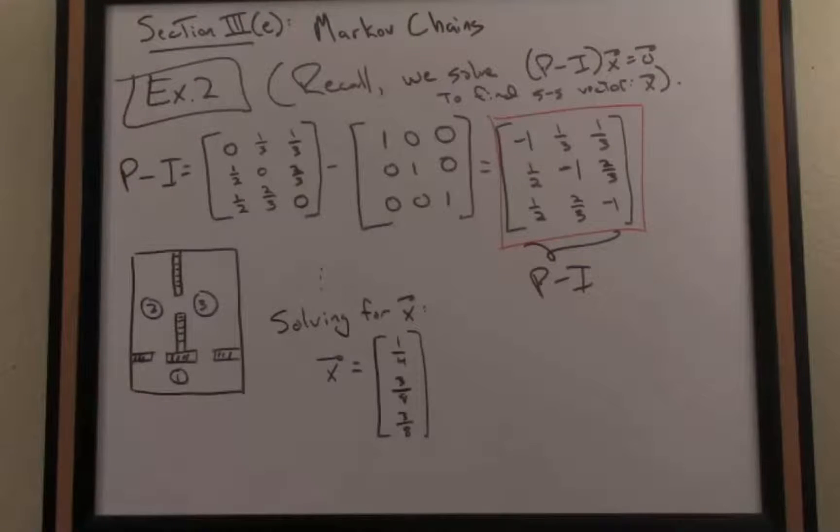The theorem guaranteed us that if our stochastic matrix is regular, then there are two consequences. One is that the steady state vector X is unique, so there is the only steady state vector fixed point for this matrix. The other guarantee is that no matter where we start in our Markov chain, the Markov chain will converge to that particular vector.